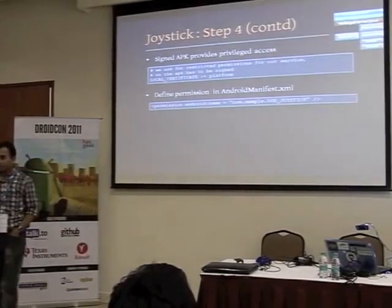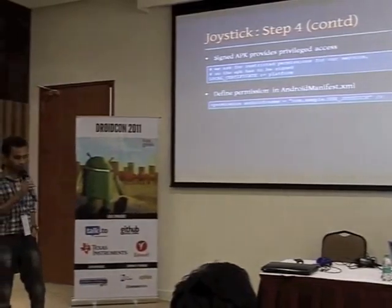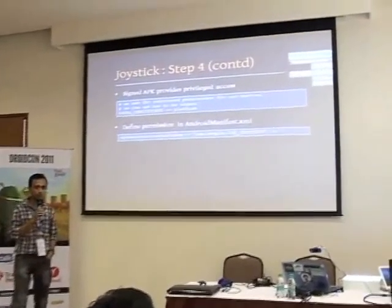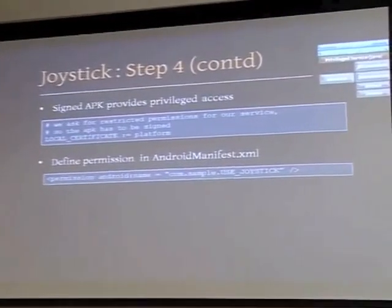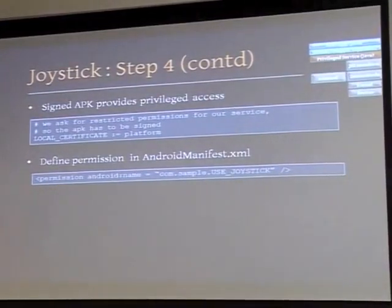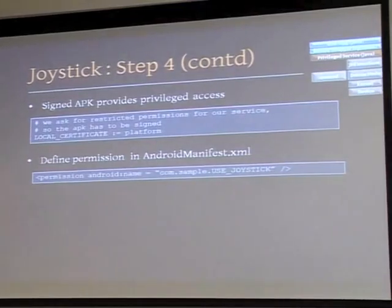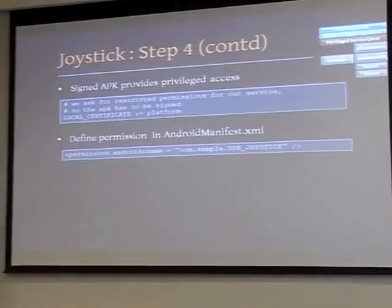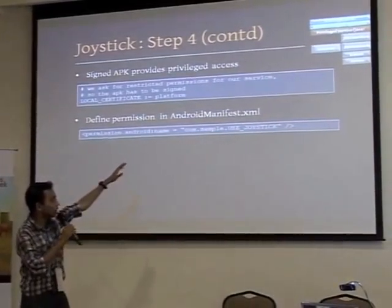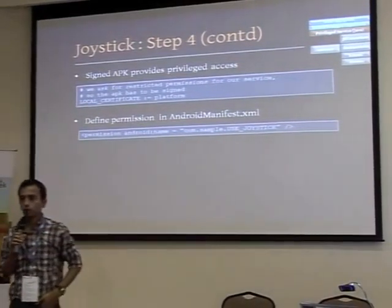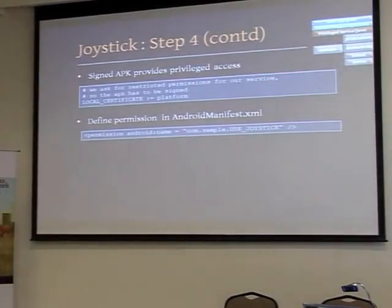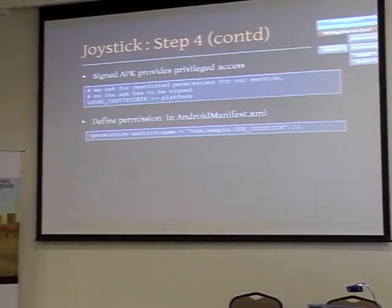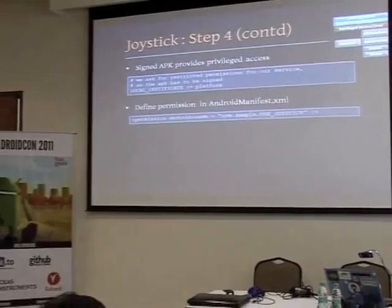The service, since it's accessing the device, needs special permissions. You certify your service with your local platform certificate. And since you're creating your own kind of device and service, you'll have to create a permission of your own — for example, 'com.sample.USE_JOYSTICK.' Your applications, when using the service, will have to declare that permission. So that's the permission step for your service.